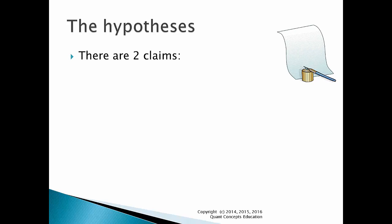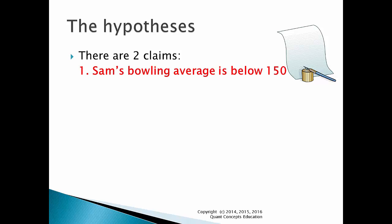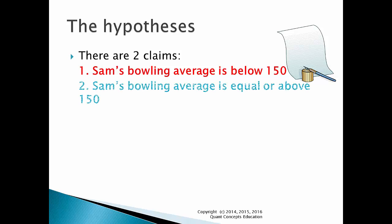There are 2 possible scenarios here. Sam is either lying or he is telling the truth, so we are essentially testing 2 claims. One: Sam's lying and his bowling average is below 150. Two: Sam is telling the truth and his bowling average is equal to or above 150.